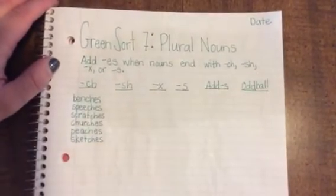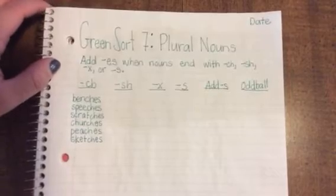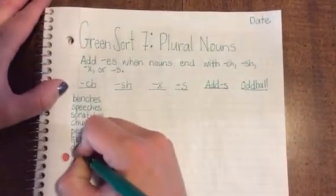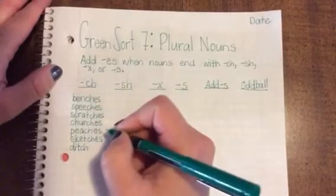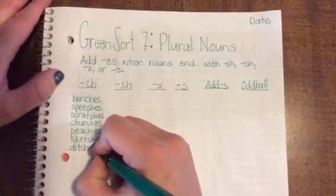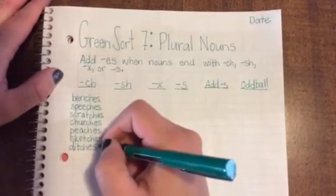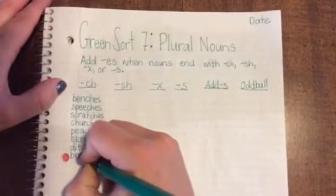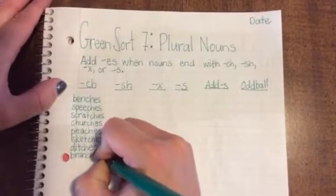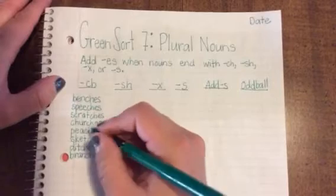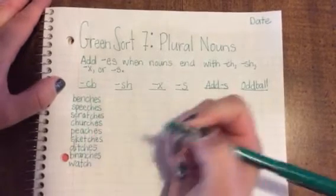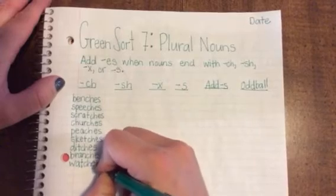A sketch is a drawing, kind of a fast drawing with pencil usually. Ditch, kind of a dip in the side of the road, becomes ditches. Branch becomes branches. And the last CH word is watch, which you would use to tell time. Watches.